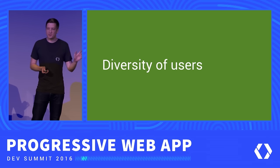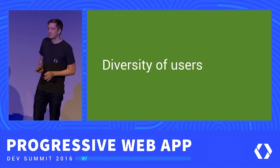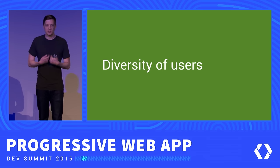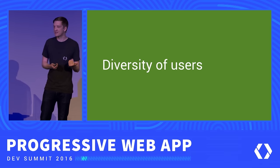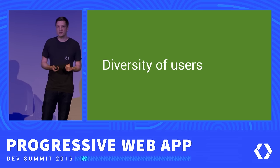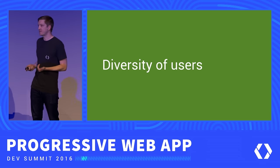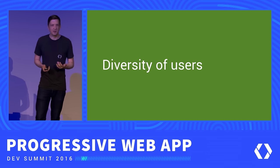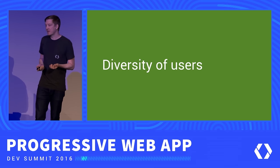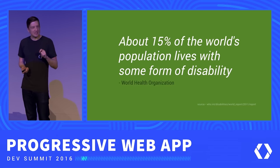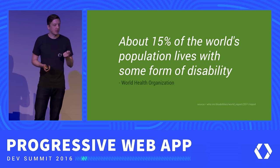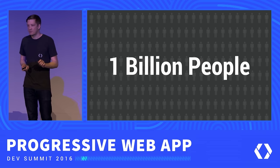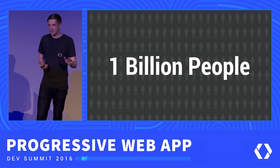I'm going to focus on users with permanent disabilities, but I want to reiterate that issues of accessibility really do affect all of us. Ensuring that users with disabilities can access content in our applications will make a better experience for everyone. According to the World Health Organization, about 15% of the world's population lives with some form of disability — that's around 1 billion people worldwide.